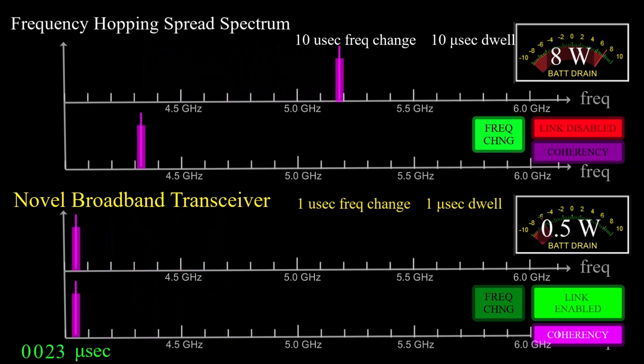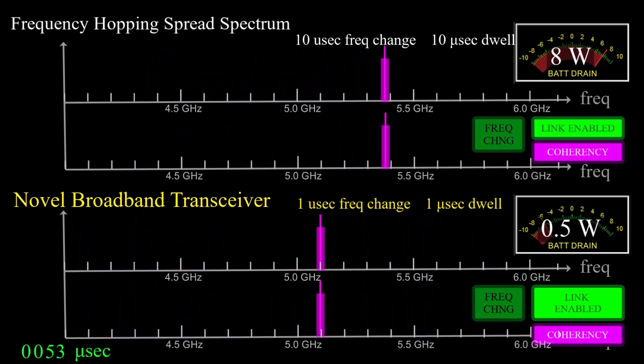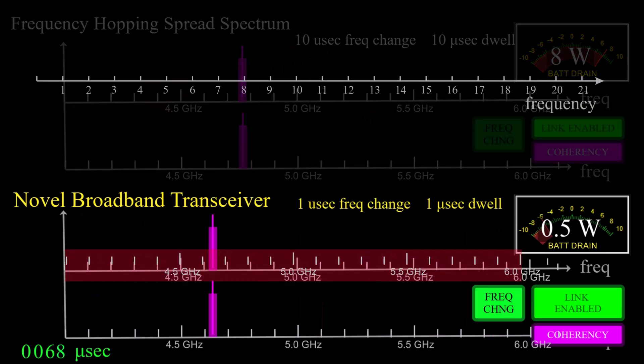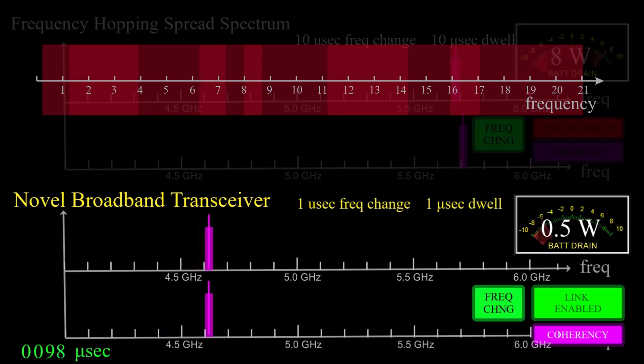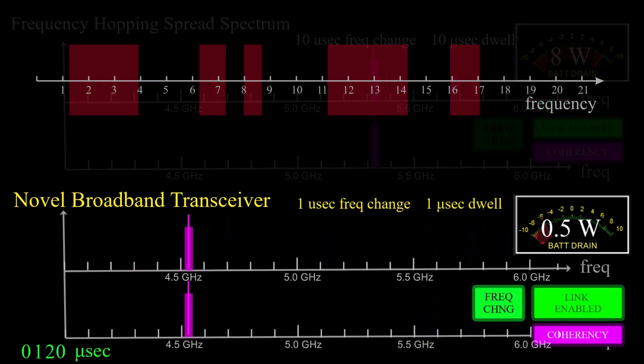The broadband transceiver is scalable. Multiple modules can be combined to cover from 100 megahertz to 20 gigahertz or higher, either continuously or in user-selected segments separated by inactive gaps, using a different antenna in each band, of course.